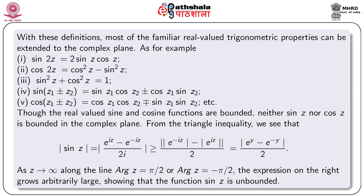With these definitions, most familiar real-valued trigonometric properties can be extended to the complex plane. For example: sin 2z = 2 sin z cos z; cos 2z = cos²z - sin²z; sin²z + cos²z = 1; sin(z₁ ± z₂) = sin z₁ cos z₂ ± cos z₁ sin z₂; and cos(z₁ ± z₂) = cos z₁ cos z₂ ∓ sin z₁ sin z₂.